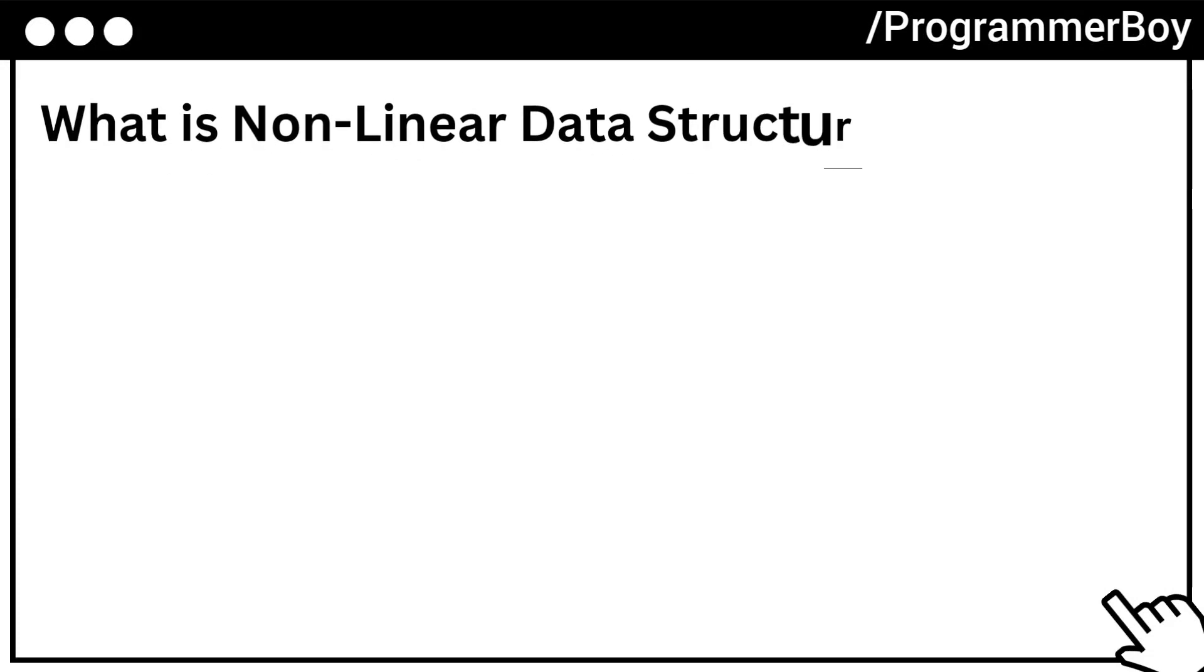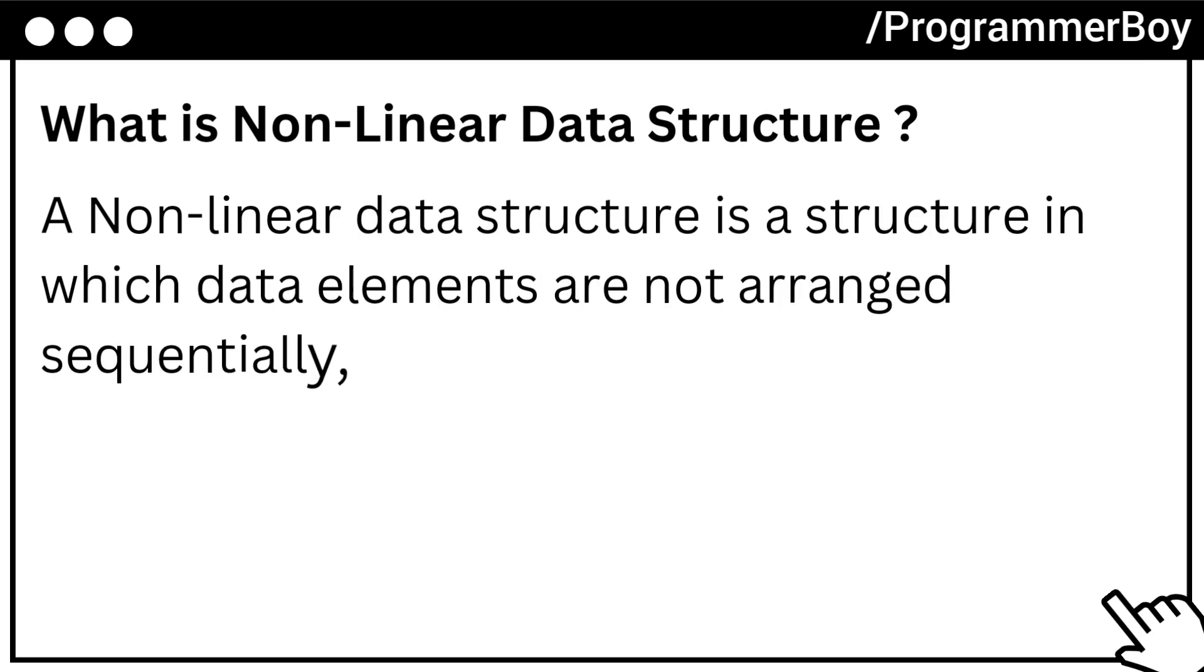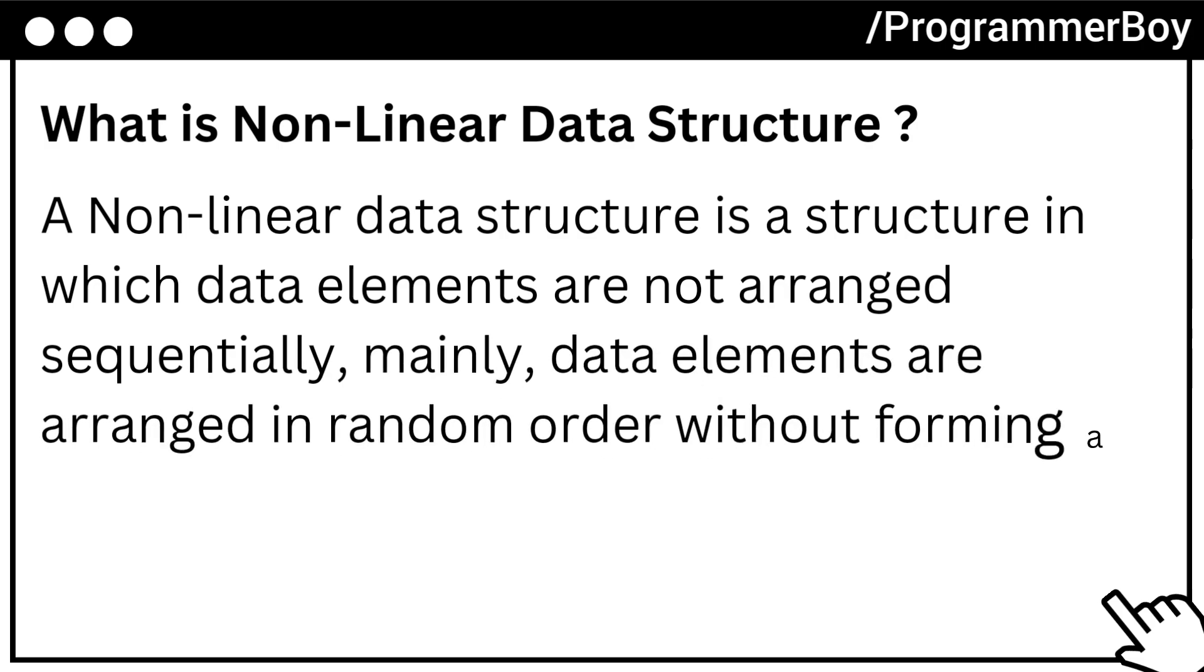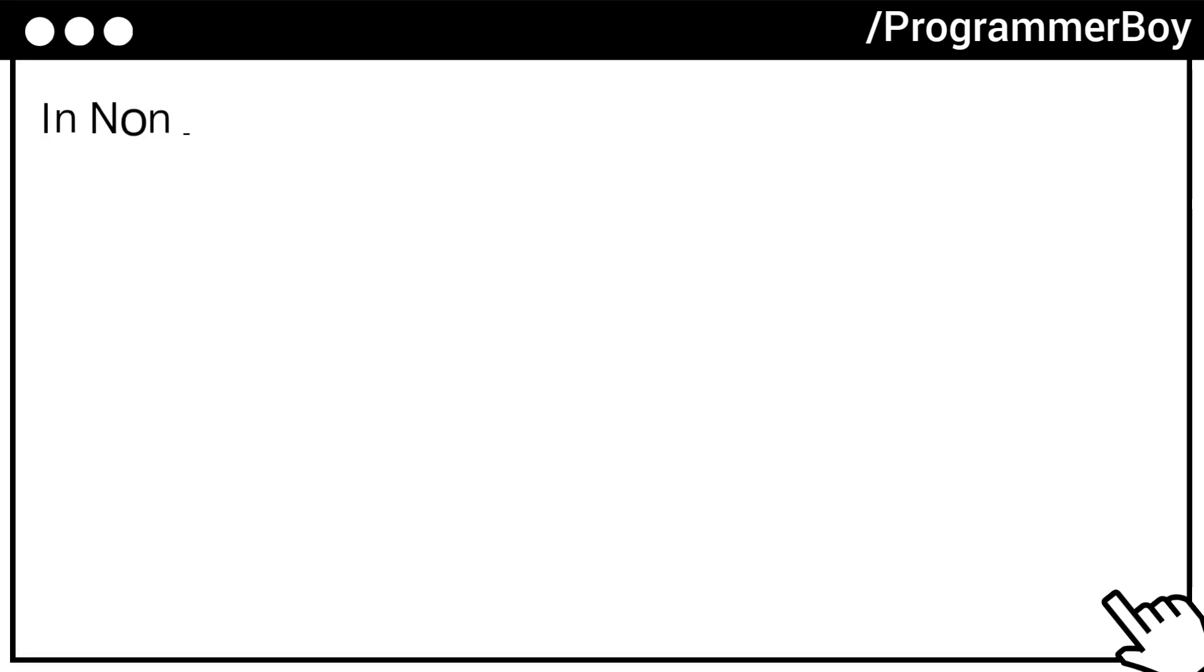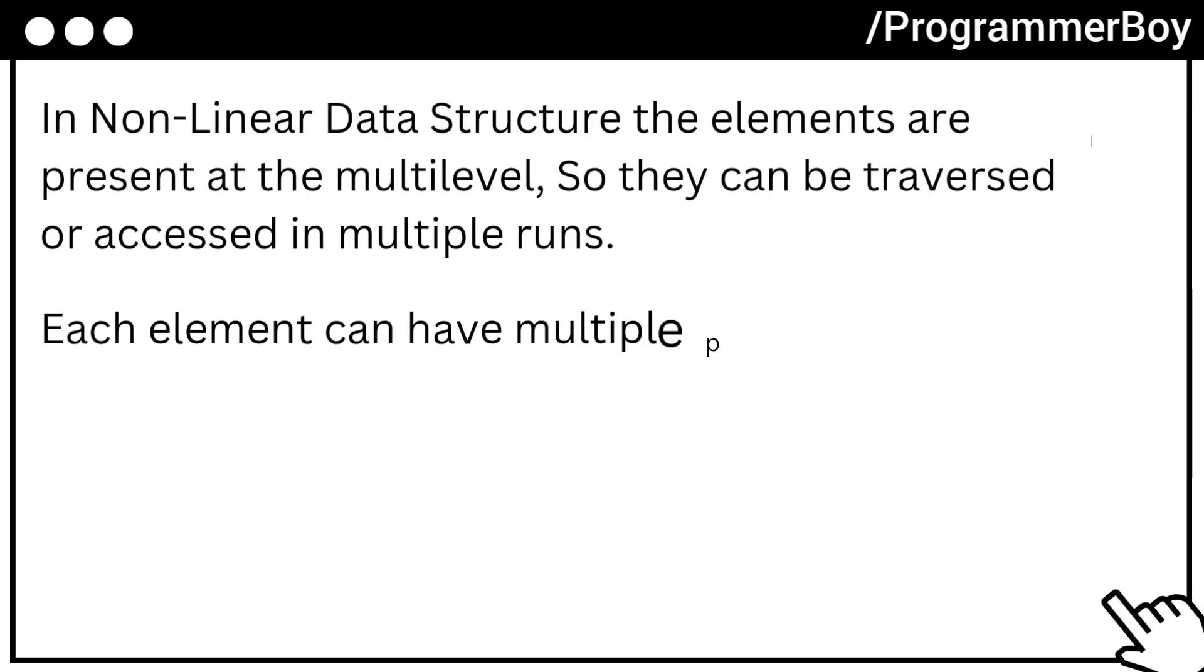What is non-linear data structure? A non-linear data structure is a structure in which data elements are not arranged sequentially. Mainly, data elements are arranged in random order without forming a linear structure. In non-linear data structure, the elements are present at the multi-level, so they can be traversed or accessed in multiple runs. Each element can have multiple paths to reach another element.